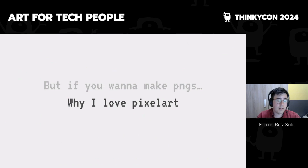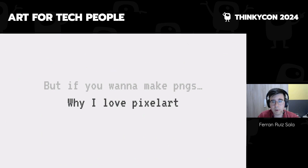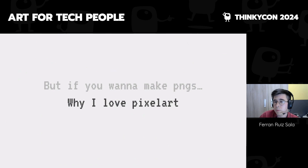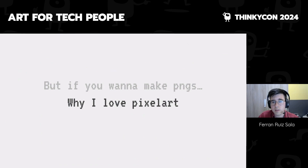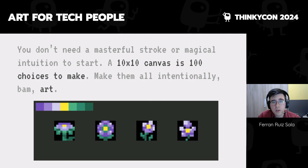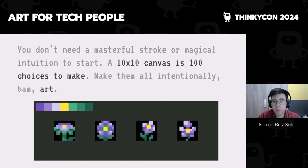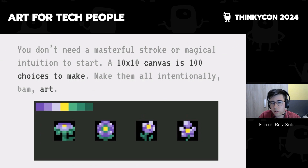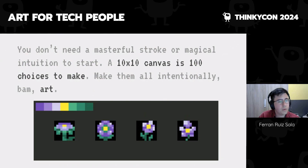This presentation is secretly about why I love pixel art, because it aligns with all of this. Pixel art is very friendly to tech people — you don't need any masterful stroke or intuitions. If you have a 10×10 canvas, those are just 100 choices you have to make, and if you make each intentionally you'll get some art at the other end. You can think about each choice really easily. I restrict myself in resolution and palette, and I can make flowers while thinking deeply about why I placed each pixel.